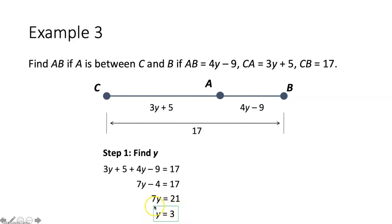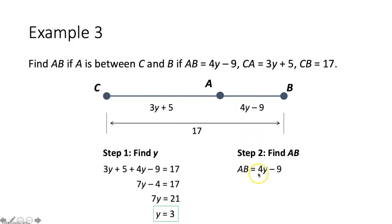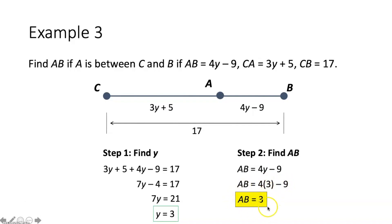We're not done — we take y = 3 and plug it in for the measure of segment AB, which is 4y − 9. Following order of operations: 4 times 3 is 12, and 12 minus 9 is 3. So the measure of segment AB is 3.